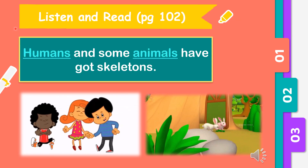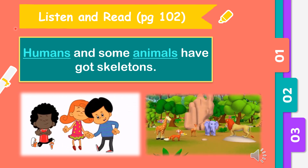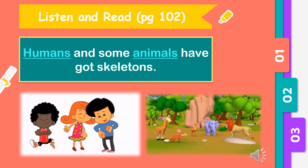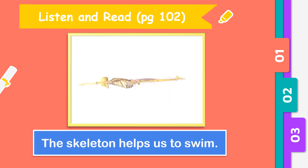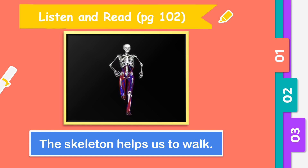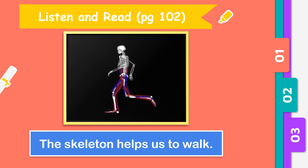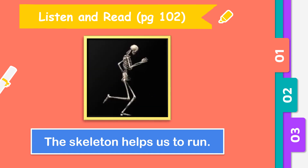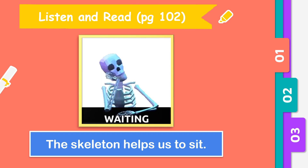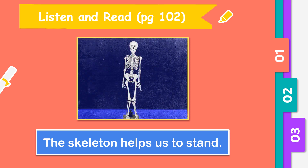Now listen and read — you can refer to our textbook page 102. Humans and some animals have got skeletons. The skeleton helps us to swim, walk, run, sit, and stand.